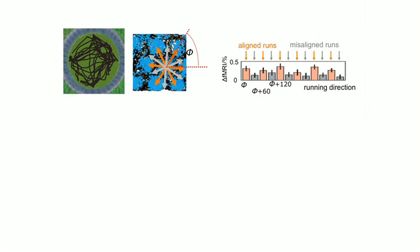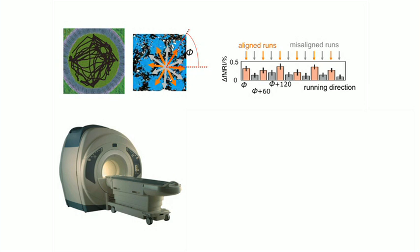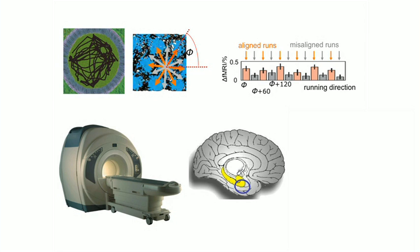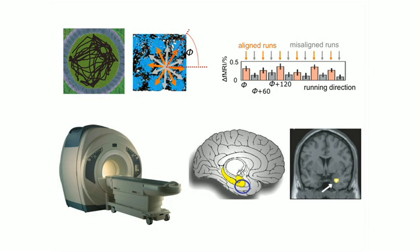So we can put people in an MRI scanner and have them do a little video game like the one I showed you and look for this signal. And indeed, you do see it in the human entorhinal cortex, which is the same part of the brain that you see grid cells in rats.